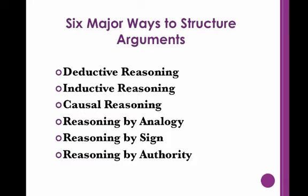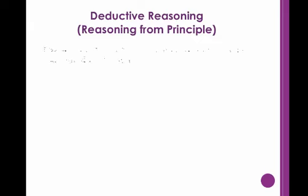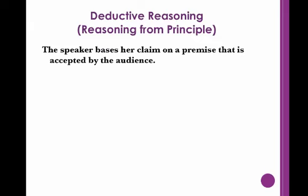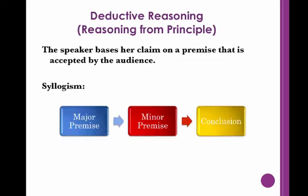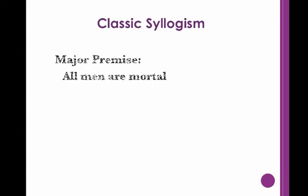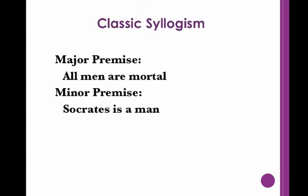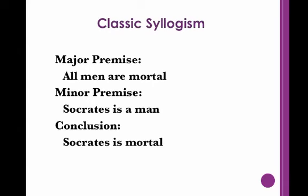Let's begin with deductive reasoning. Deductive reasoning, also known as reasoning from principle, is when the speaker bases her claim on some premise that is accepted by the audience. A premise is a statement that is assumed to be true. Deductive reasoning can be mapped out in the form of a syllogism. A syllogism contains a major premise, a minor premise, and a conclusion. For example, look at this classic syllogism: All men are mortal. Socrates is a man. Therefore, Socrates is mortal.